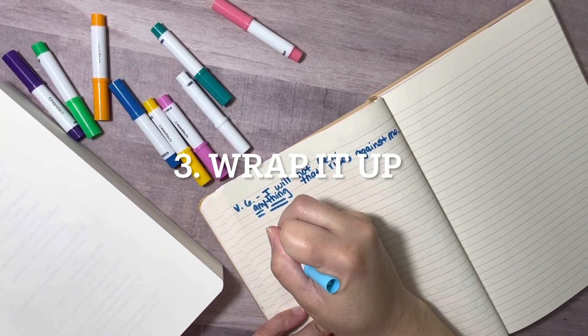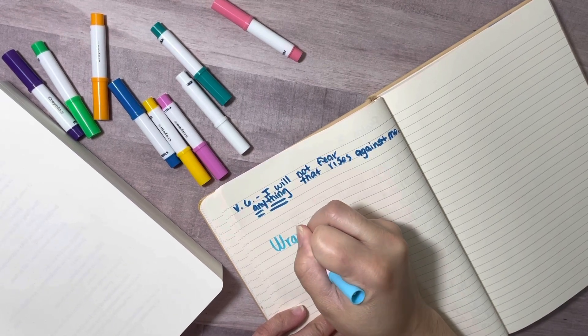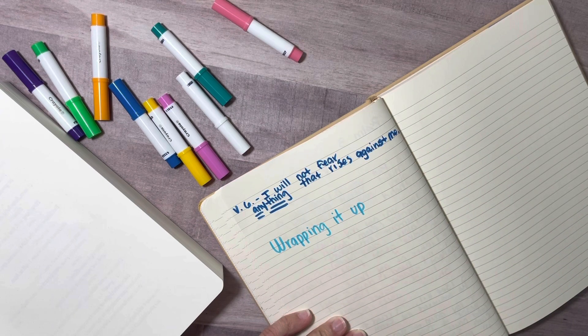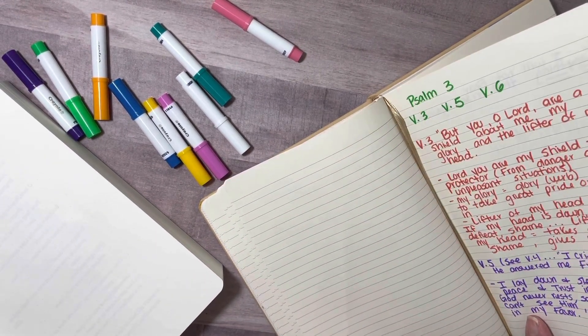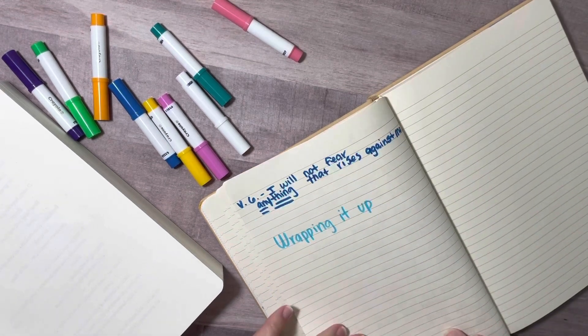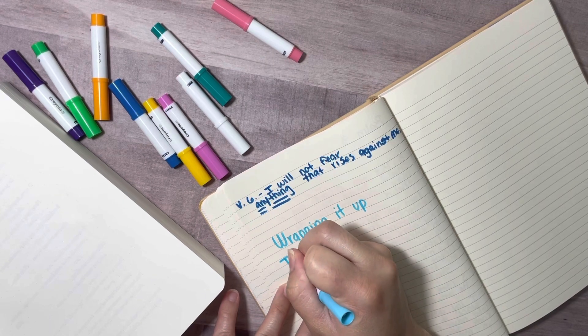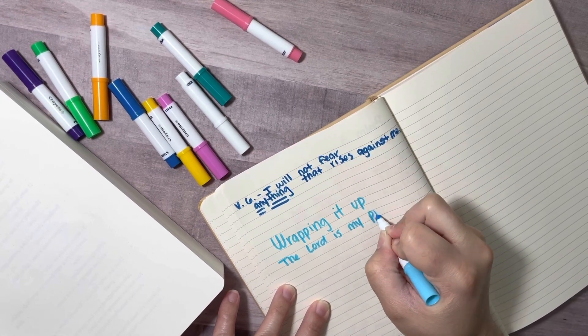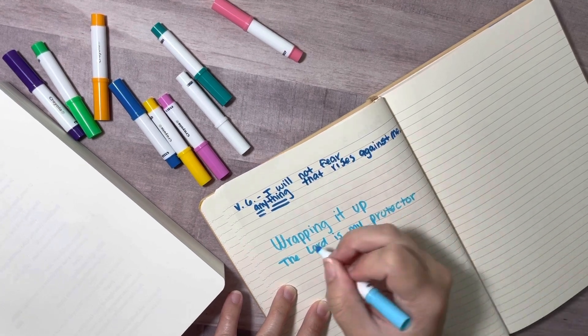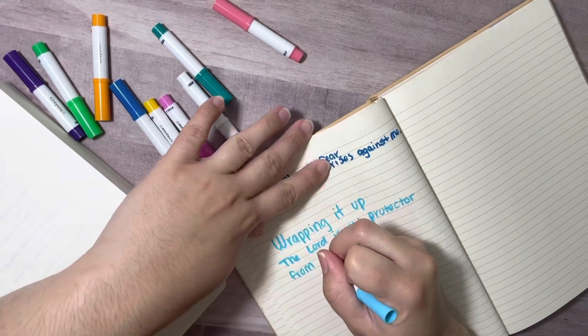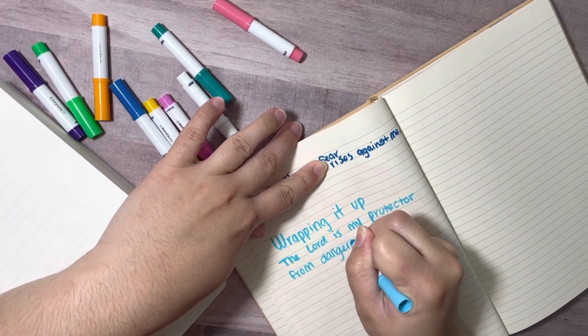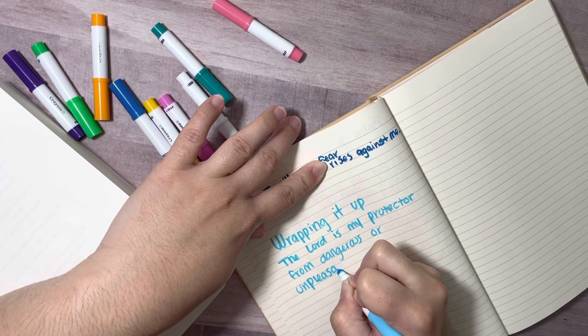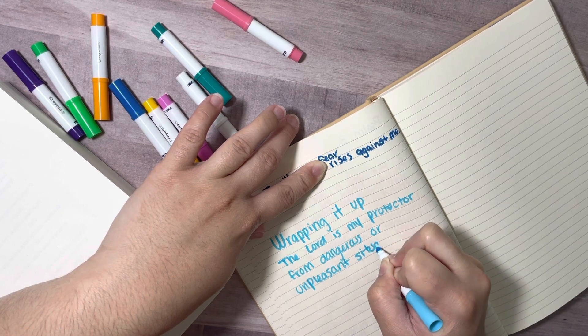I like to do something at the end of my notes that I like to call wrapping it up. So what I do is just to wrap it all up, wrap up everything that I learned from this song. I kind of just put it at the end of my notes. I look back to see all those little points that I made, bullet points that I made that I learned things that I learned. And what did I learn from this song? The Lord is my protector from dangerous or unpleasant situations. I find pleasure and pride in him. He takes away my fear, my shame, and gives me strength. I can lay down to rest at night and trust that he is working in my favor.